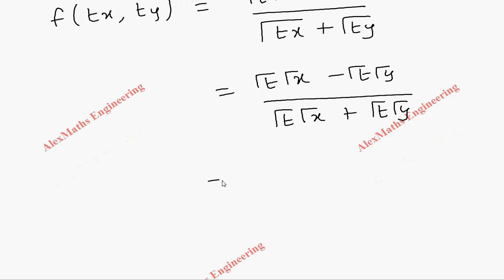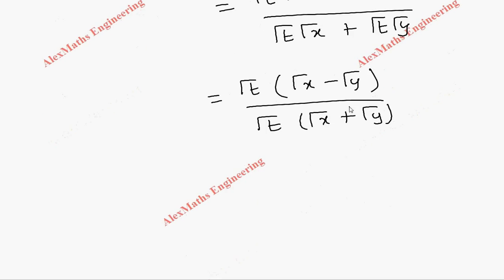Take common terms in the numerator outside, so root t is common, so we are left with root x minus root y. Even in the denominator we take root t common, so root x plus root y. Now these two will get cancelled. This is t power half, when we carry this to the numerator we get t power half minus half, so it is t power 0, and the remaining term is nothing but f(x,y).